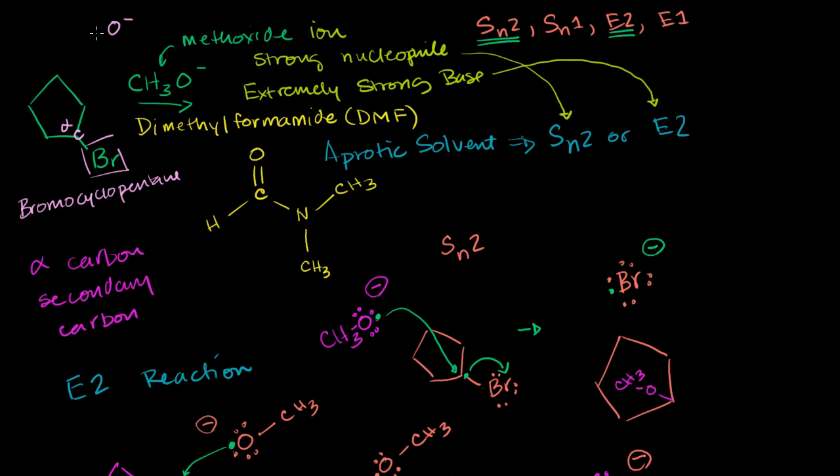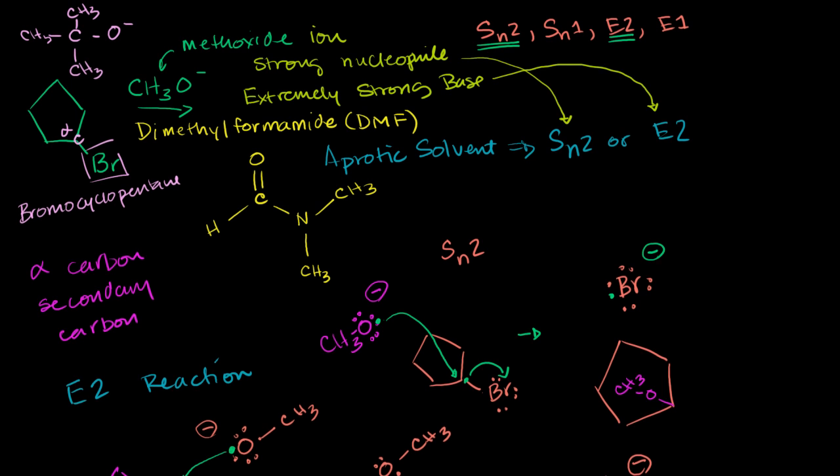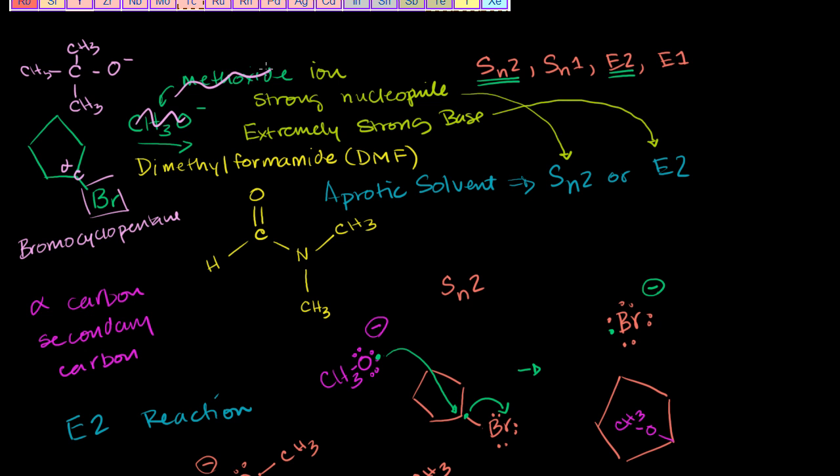So it's still going to have the O minus, but it's going to be bonded to a carbon which is then bonded to three methyl groups, CH3, CH3, just like that. So we don't have methoxide anymore.